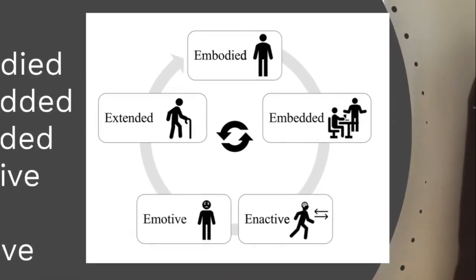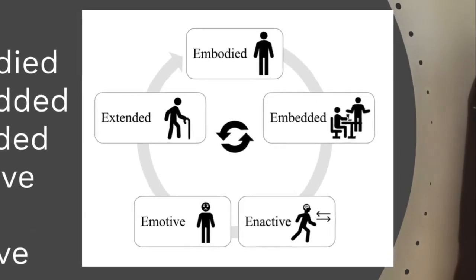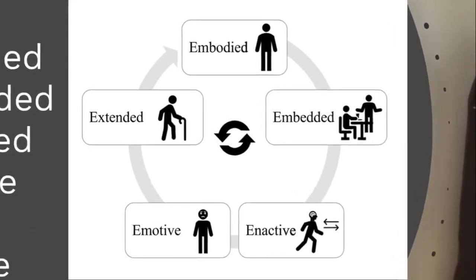Embodied regards the unity of body and mind. Embedded means that the mind is to be considered in the relationship with the environment. Enacted means that the mind is also related to the body and to its quality of action.